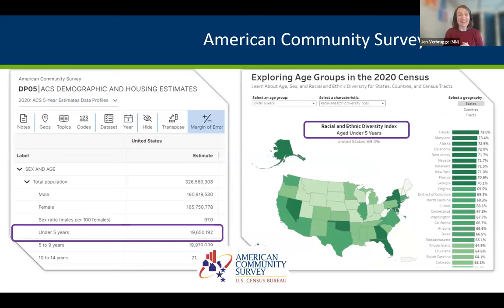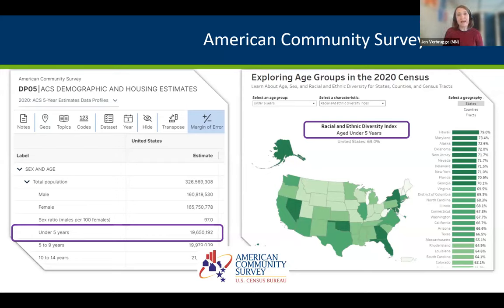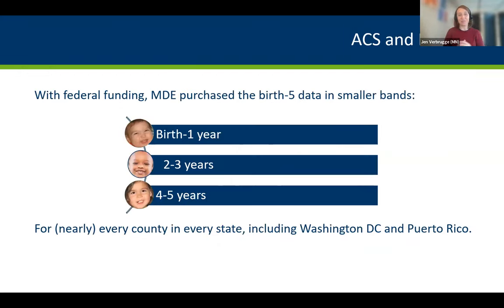The American Community Survey through the U.S. Census Bureau is really the premier source of data we have — the best source for information about kids under the age of six. However, the data available through the ACS website is only shared in one lumped grouping of under five years, which does not tell us much about the babies, toddlers, and preschoolers within that group. We worked with partners at the Census Bureau to get more detailed information. We were hoping for data at each individual age, but that data isn't made available to anyone. So we compromised on age bands: babies, which is birth to one year; toddlers, two to three years; and preschoolers, four to five years.